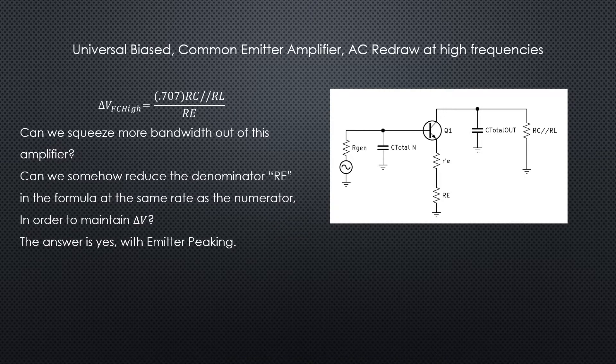One way of looking at it—it might not look like there's much we can do with the numerator. It's got the c total out in parallel with rc in parallel with rl, and as frequency goes up that x sub c is just going to keep on going down.